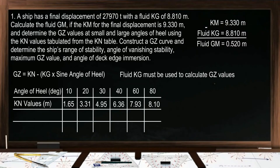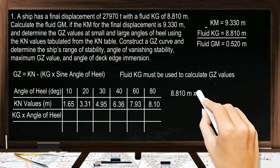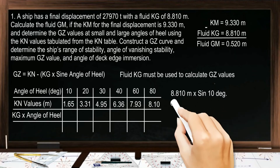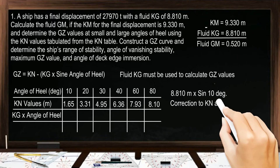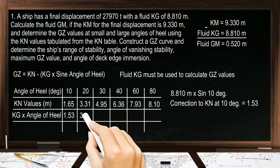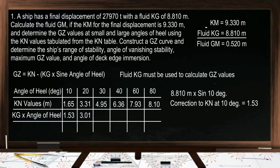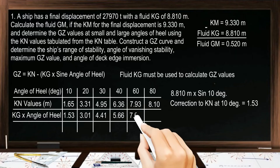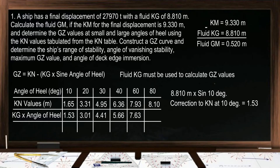Next, we will find the correction to KN at every angle of heel using the formula KG × sin(angle of heel). The KG is 8.810 meters. At 10°: correction = 1.53; at 20°: 3.01; at 30°: 4.41; at 40°: 5.66; at 60°: 7.63; and at 80°: 8.68.